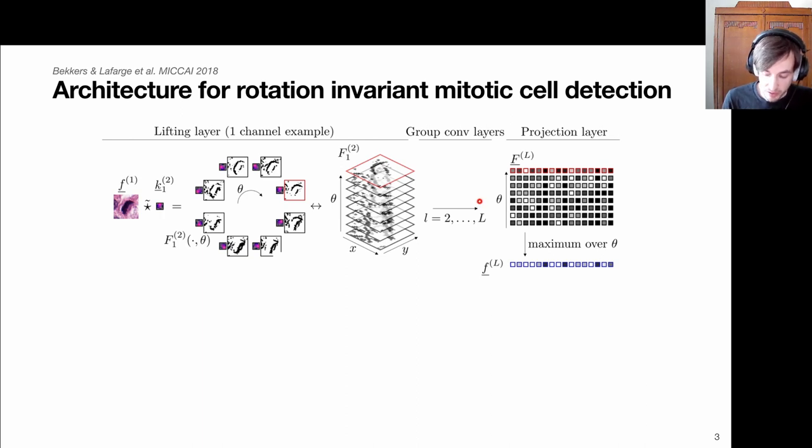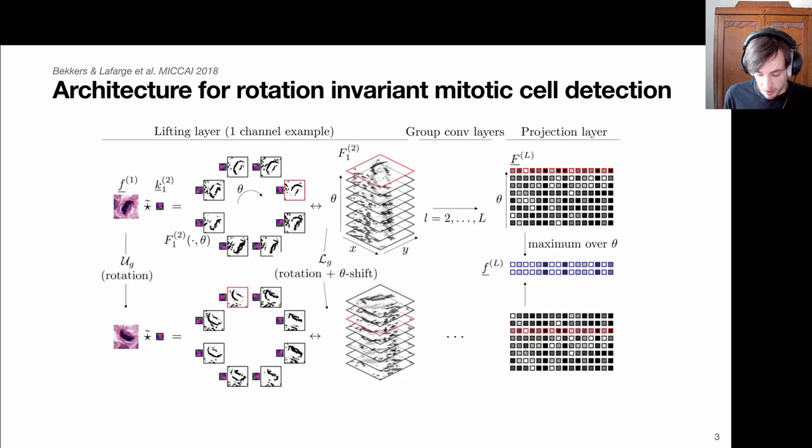Then we apply our group convolutions to reduce it, without padding on the spatial axis, to eventually a single point and all possible rotations. Vertically you see all these different feature values that are remaining. If you want to make this pipeline completely rotation invariant, we do pooling over this extra rotation axis to come up with a feature vector representing this entire patch.